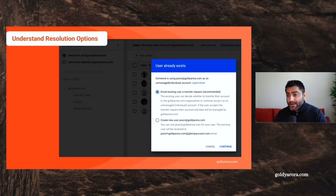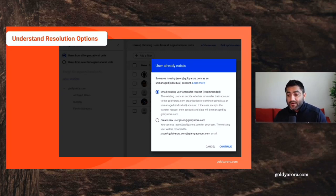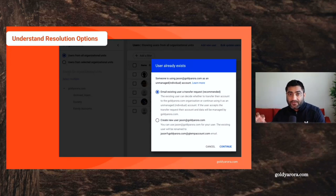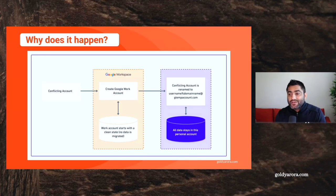This means they have rights to claim or create any email address on this domain. As a consumer user, you do not have that right. So when the admin went to the Google Admin Console and tried to create this account, they saw a message saying this user already had a consumer or personal account. There are two options: request the user to transfer their data from personal to work account, or create the account anyway — which renames the consumer account to a gtemp address. The second option is exactly what happened, turning your email into a gtemp account.